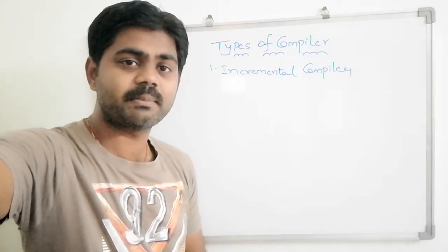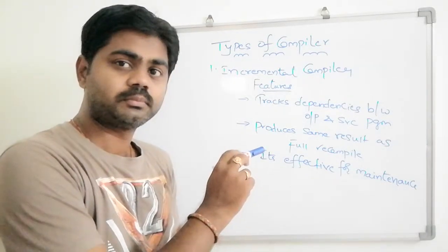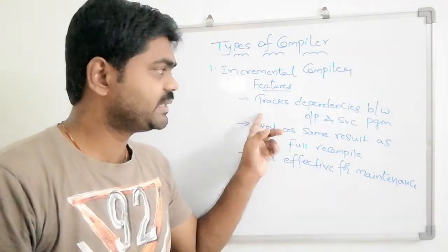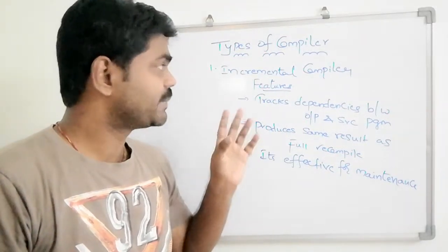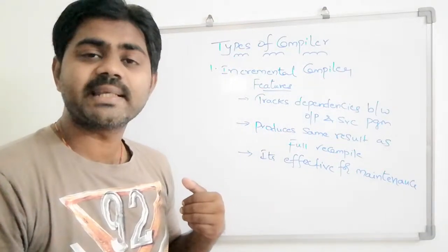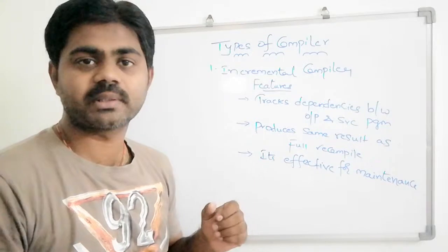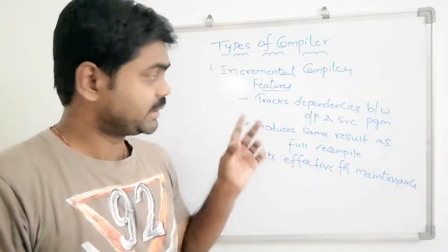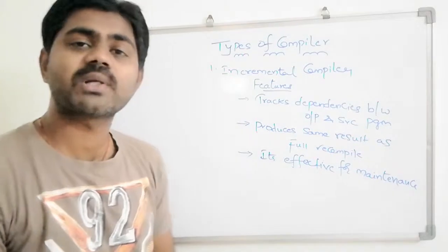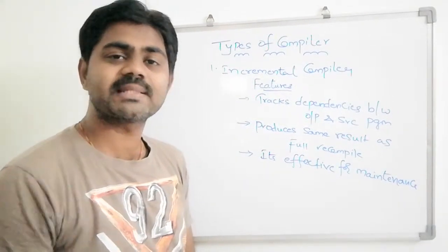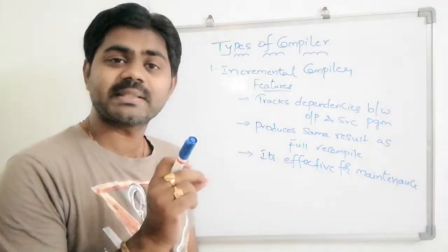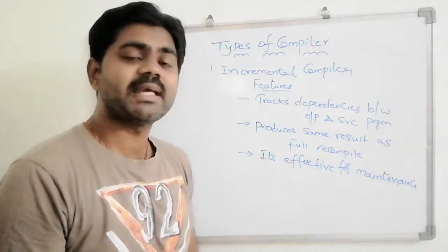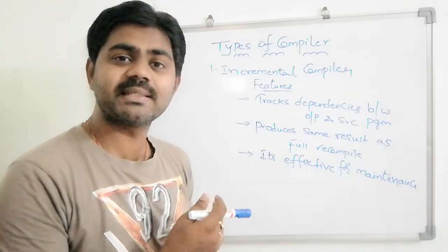Now let's discuss the basic features of incremental compiler. The first feature is that it tracks the dependencies between the output and the source program. Instead of recompiling the entire source program, it compiles only the modified source program. The incremental compiler produces the same result as a full recompile, because even though we only compile the modified part, we can expect the same result.